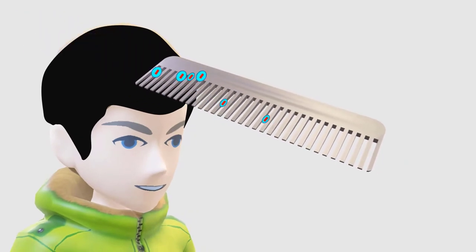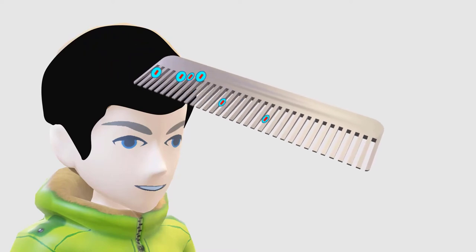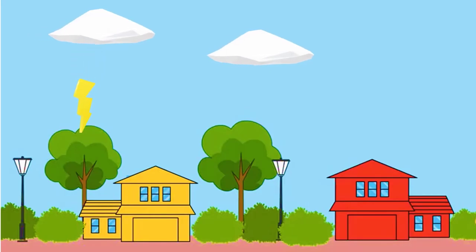When a comb is rubbed with hair, some electrons transfer from hair to comb. Lightning is actually a gigantic electrical discharge between two charged clouds or between a cloud and Earth.